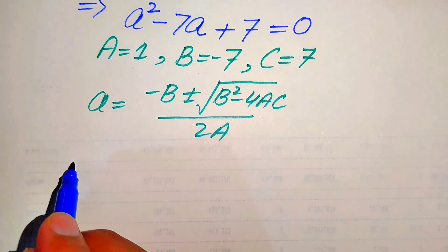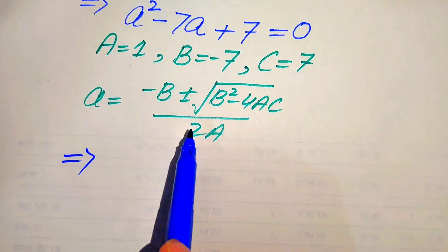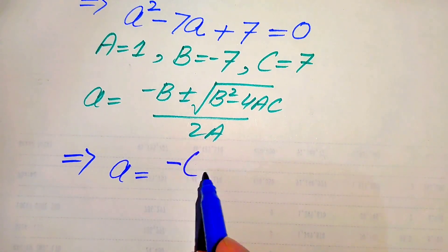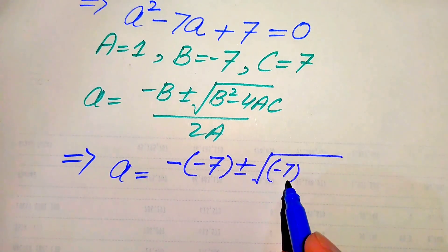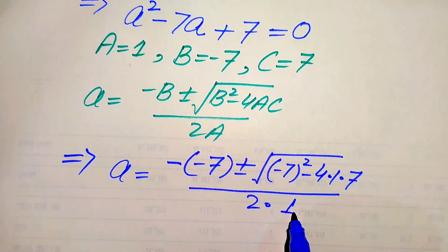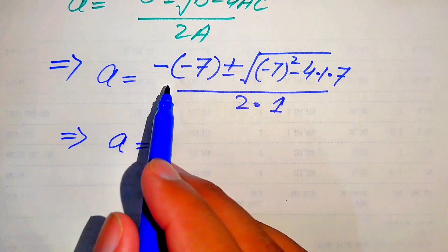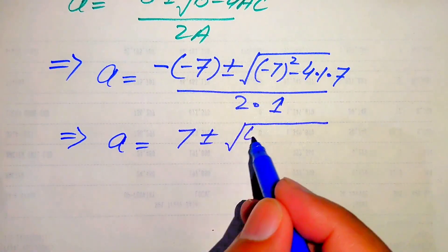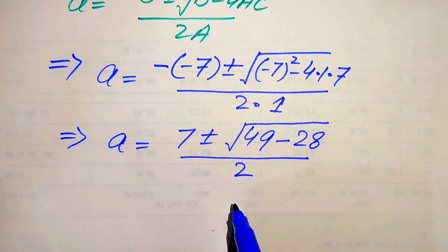Substituting the values: A equals minus (minus 7) plus or minus square root of (minus 7) squared minus 4 times 1 times 7, divided by 2 times 1. This simplifies to 7 plus or minus square root of 49 minus 28, divided by 2.